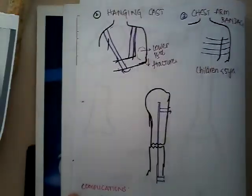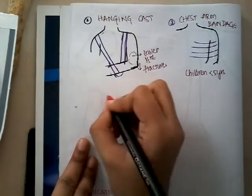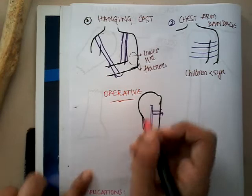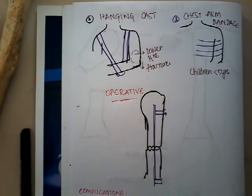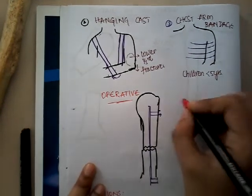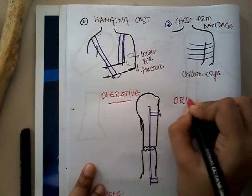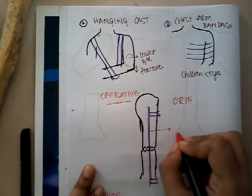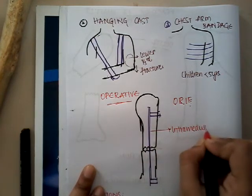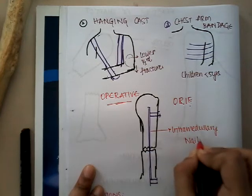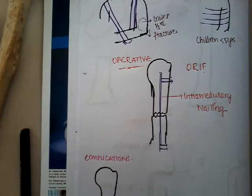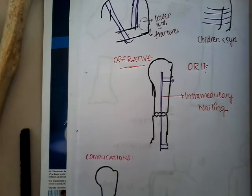Once the fracture fragments are aligned, the main aim is to start shoulder exercises and mobilization. If conservative treatment fails or if the fracture is very unstable and reduction is not possible, we go to operative treatment. The major operative method is open reduction and internal fixation (ORIF), using an intramedullary nail for internal fixation. For open or infected fractures, stabilization with an external fixator is used.